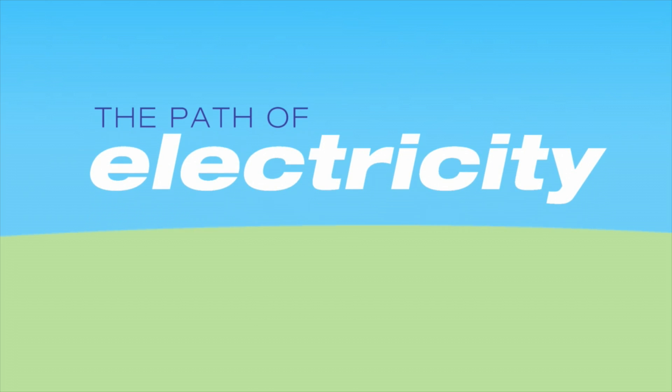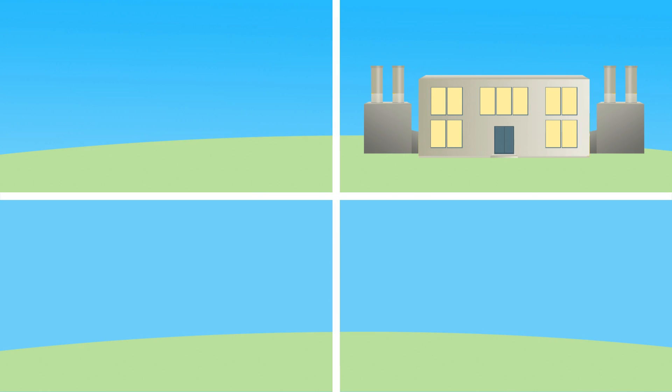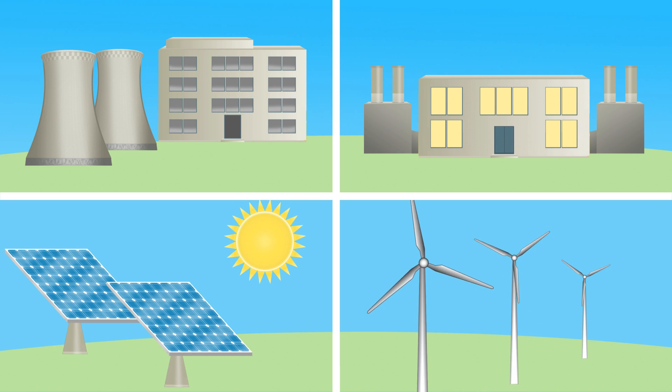So how does it get to us from start to finish in an instant? It starts at a source of generation, usually a power plant, like a natural gas facility or a nuclear plant, but sometimes at another source, like a solar farm.